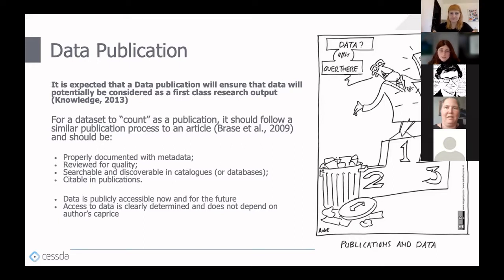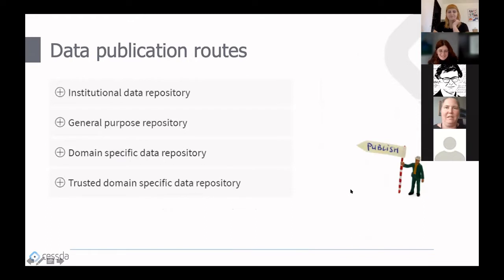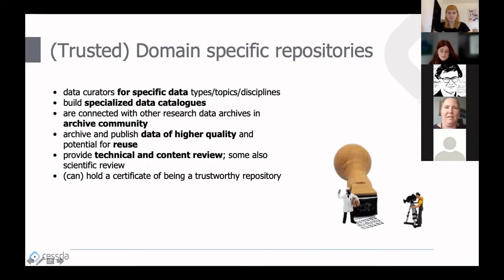Access to data is clearly determined and does not depend on the author's whim. There are different data publishing routes available, provided by various types of repositories. Let's start with trusted domain-specific repositories. They offer expert data curators for specific data types, topics, or disciplines, and build specialized data catalogs connected with other research data archives.